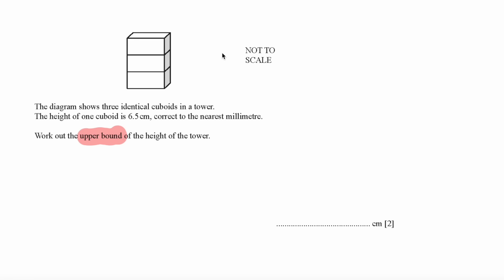To calculate the upper bound of something, you look at the nearest millimeter which is 0.1. Divide this by 2, you get 0.05. Hence your upper bound will be 6.5 plus 0.05. Since we have to calculate the height of the tower, you multiply this by 3, giving us a final answer of 19.65.